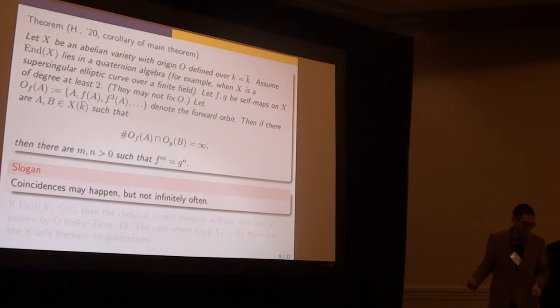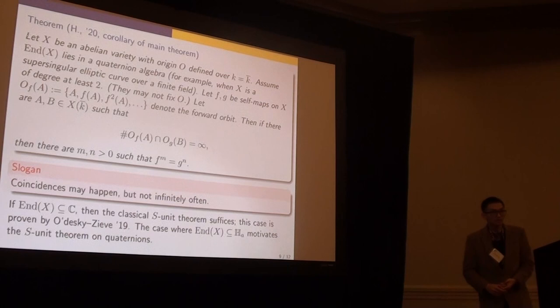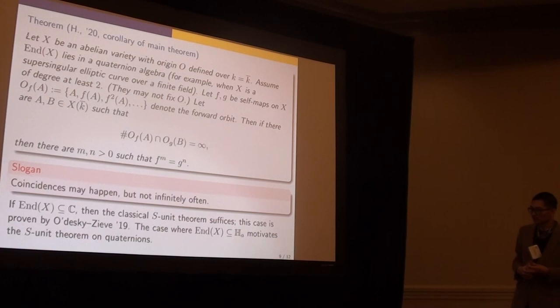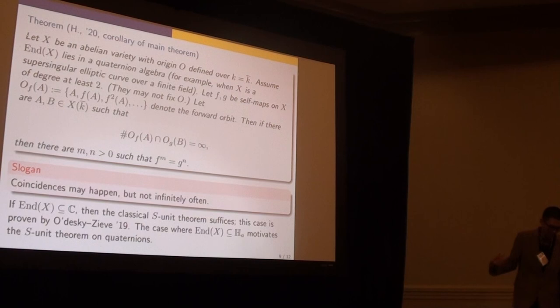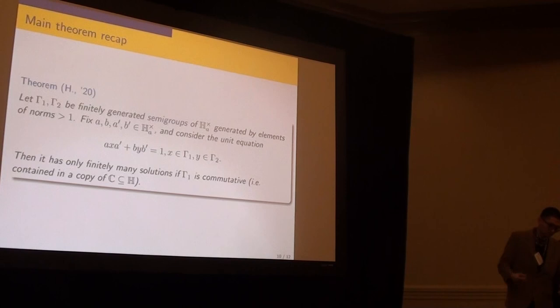It fits into this theme. The whole thing can be reduced to a unit equation on the endomorphism ring of X. If endomorphism ring is in C, then the classical result was proven by Ghioca and Zieve. But the case where you need a quaternion is indeed what motivated this, therefore I'm able to extend the result. Here I have finished all the results. Since I still have one more minute, I'm going to say one small thing about an intermediate step of the proof.